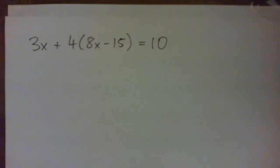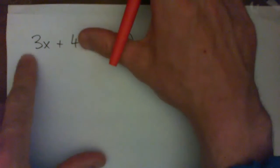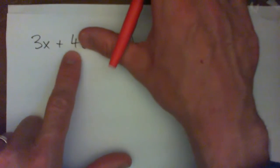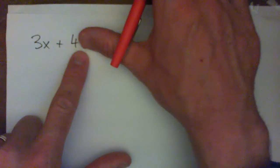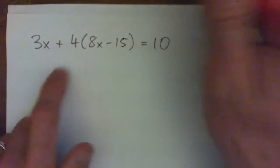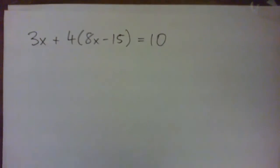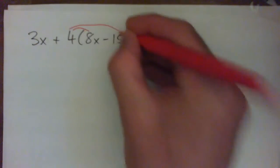Alright, so we've got 3x plus 4 times 8x minus 15 in parentheses equals 10. So we can't add the 3x and the 4 for a couple of reasons. One, they're not like terms. This is an x term, that's a number. And for another reason, we've got to multiply first. So we've got to multiply this guy in here first.